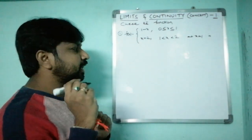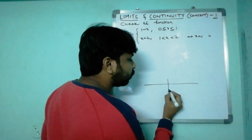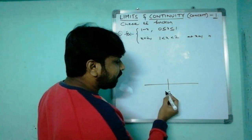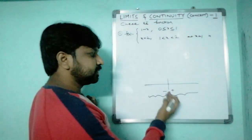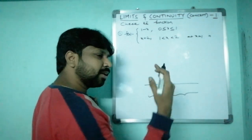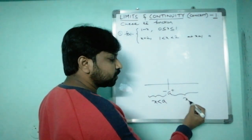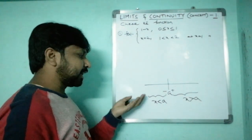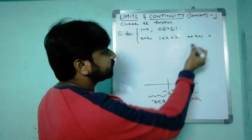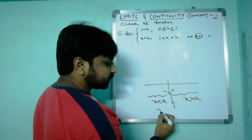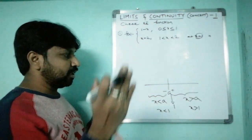Left limit means x less than a, and right limit means x greater than a. Here a = 1, so we check x less than 1 and x greater than 1. The left-hand limit is limit x tends to 1 minus of f(x), and x less than 1 corresponds to the piece f(x) = 1 − x.